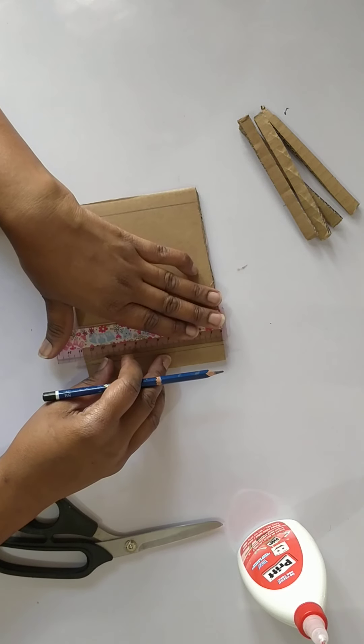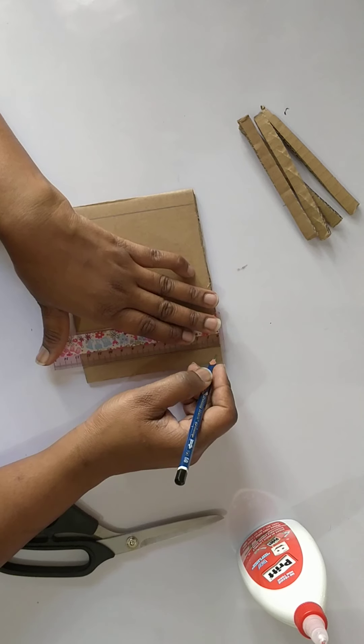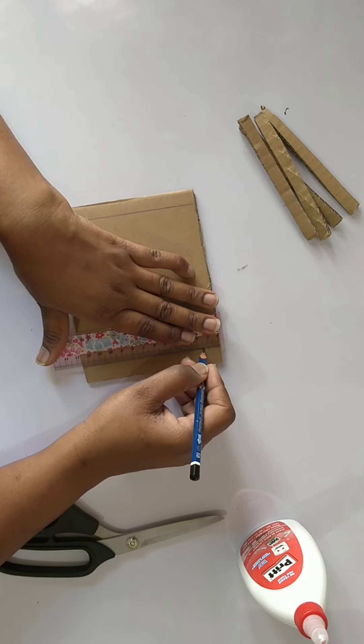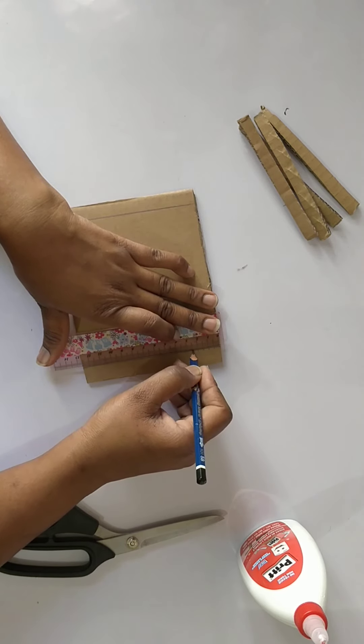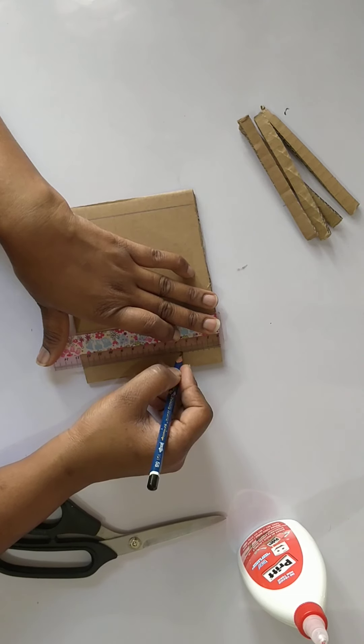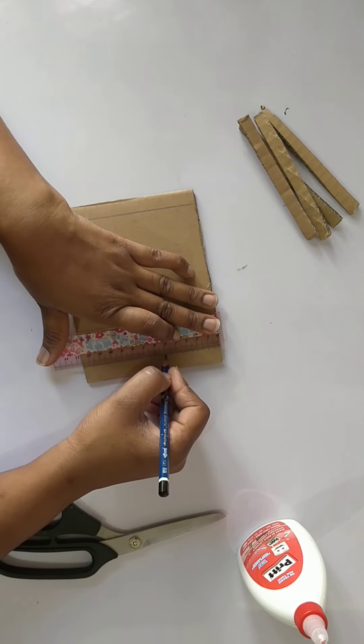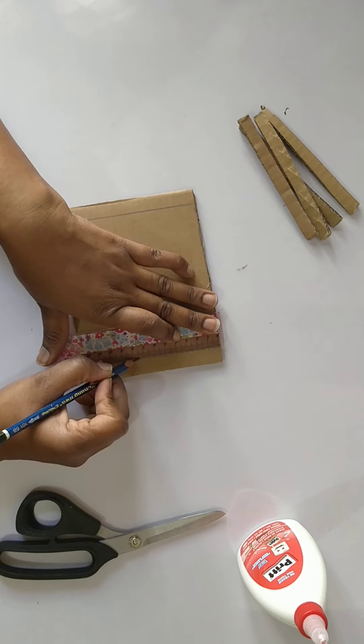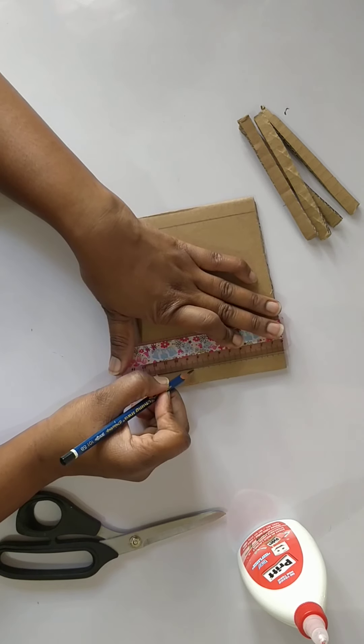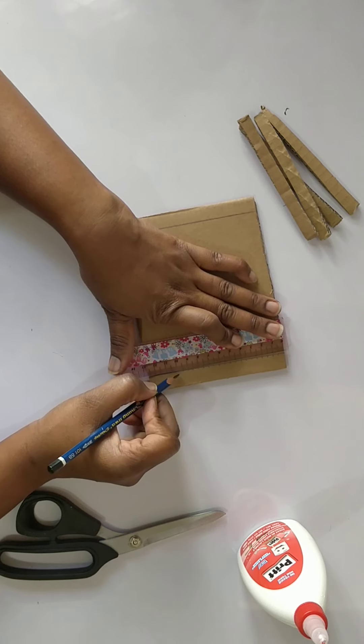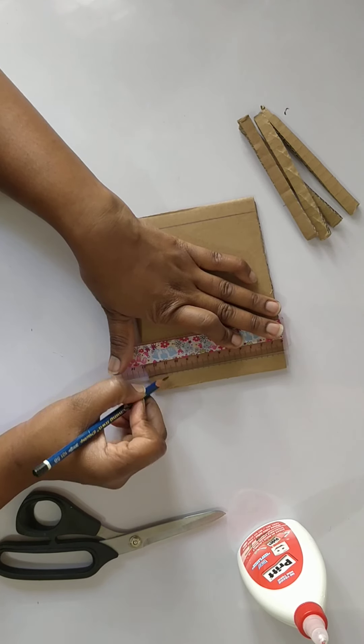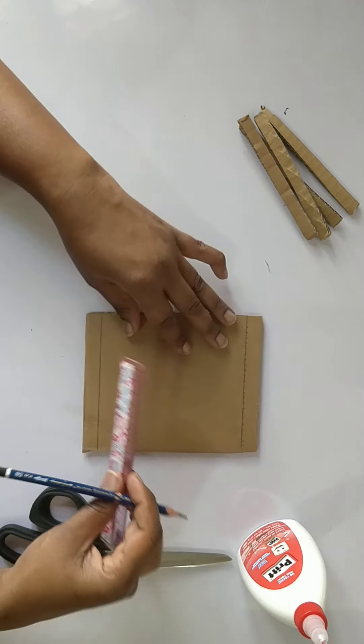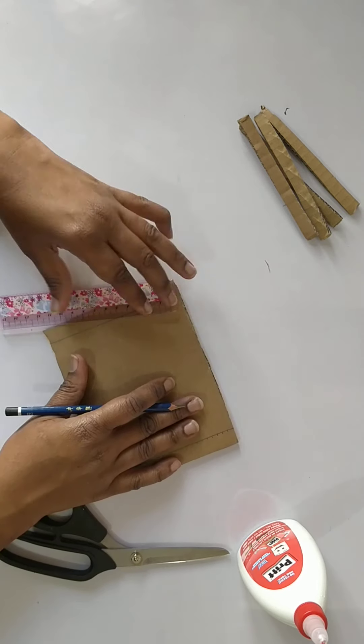I'm now going to take my ruler and mark half a centimeter right across. If you're using inches, you would mark every quarter inch. You're going to do that at the top and the same thing at the bottom.